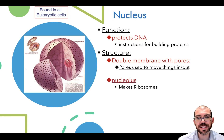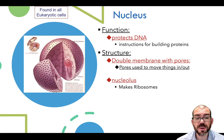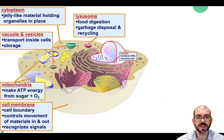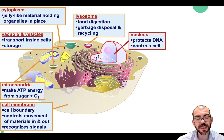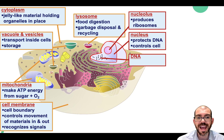Inside the nucleus is another structure called the nucleolus — it's a small circle you can see inside it. The sole purpose of the nucleolus is to produce ribosomes. On a cell diagram, the nucleus is the largest structure when looking at a eukaryotic cell. The nucleolus is the small circle inside it, and this is where DNA is stored in the cell.